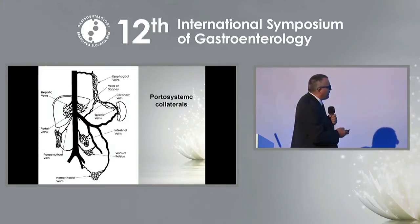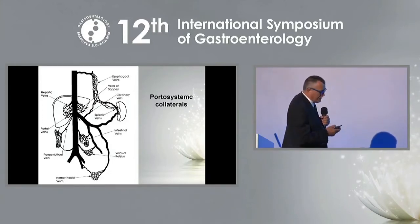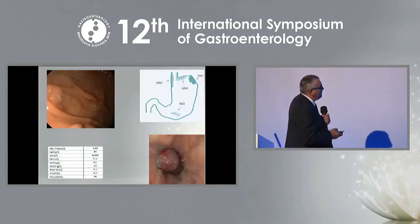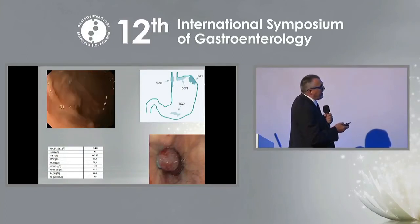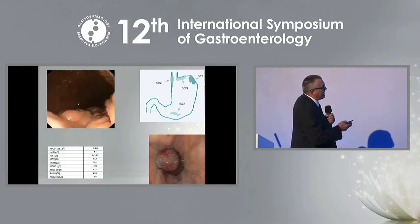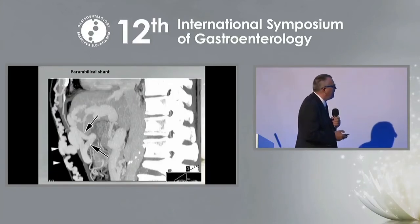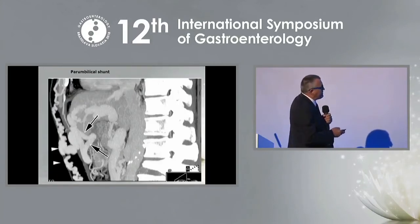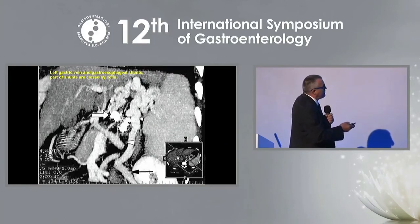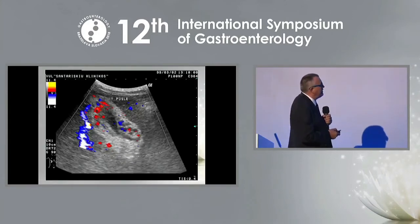Collaterals also form in the retroperitoneal space and within the liver itself. Those collaterals around the spleen are very large and associated with isolated gastric varices, which can extend to gastroesophageal varices type 2. There may also be a periumbilical shunt and shunts in the abdominal wall in cases of thrombosis. Some thrombi are blocked by coils, but large varices around the stomach remain and the risk of bleeding still exists.